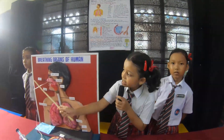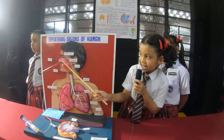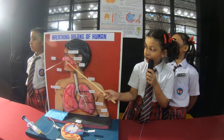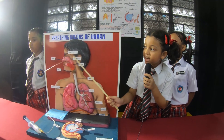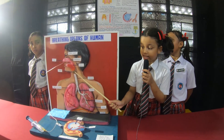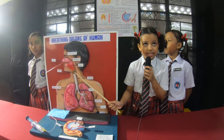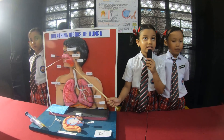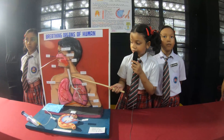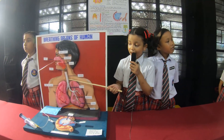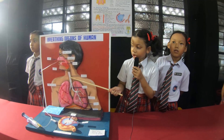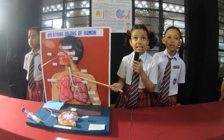The breathing system starts from the nose, then the nasal cavity, where air gets filtered and humidified. Then comes the nasopharynx and pharynx, which connects the nose to the larynx. The larynx is also known as the voice box as sound is produced here. The trachea carries air to the lungs. It is also called the windpipe. We can see it here surrounded by hard rings so that it doesn't get collapsed.